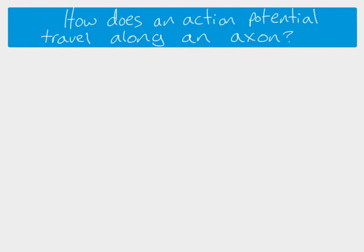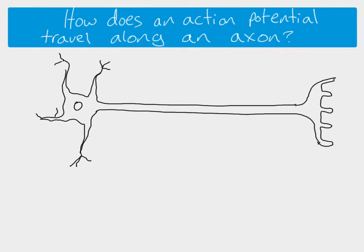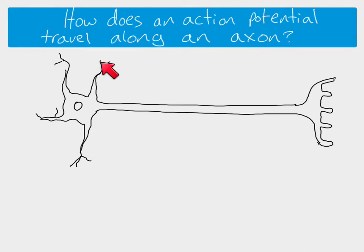So how does the action potential travel along the axon? If we think about a motor neuron, the impulse is going to start here. These dendrites will be connected to a relay neuron — there'll be a synapse — so the impulse will come down the relay neuron, cross the synapse, and start at the tip of the dendrites, then travel all the way down the axon to the end.